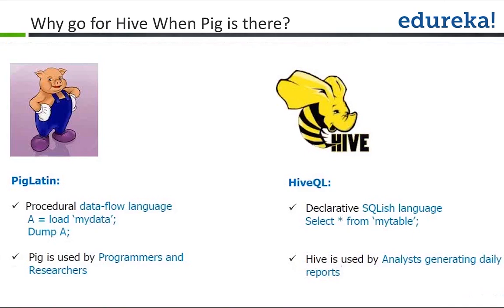Why go for Hive when Pig is there? When you talk about Hive, it exposes your data in the form of SQL — anytime you need to provide a SQL interface and represent your data in table and column format, you can use Hive. When it comes to Pig, it provides a similar capability but you will never be able to access the Pig dataset as a table or write SQL — it's always direct interaction with files. Pig is preferred by programmers and researchers, while Hive is generally used by analysts who can easily analyze data with the Hive SQL interface.